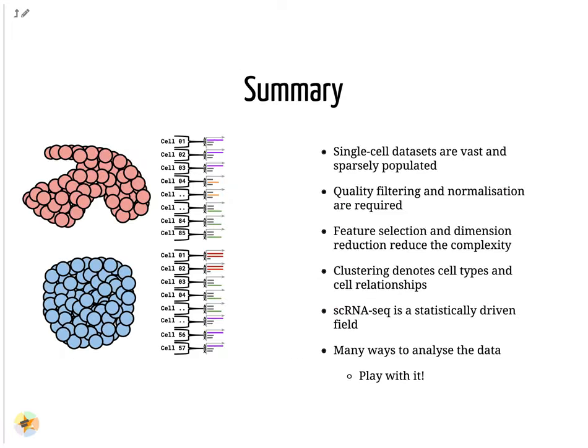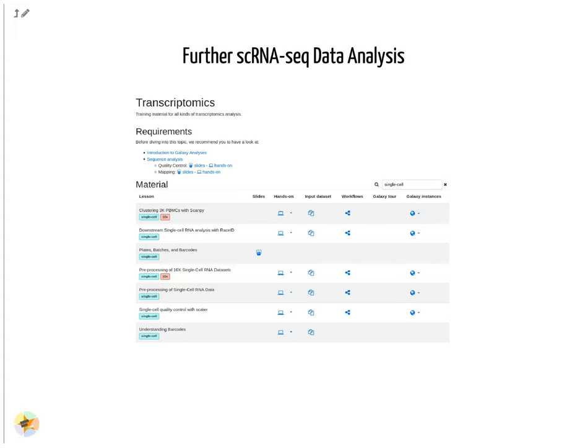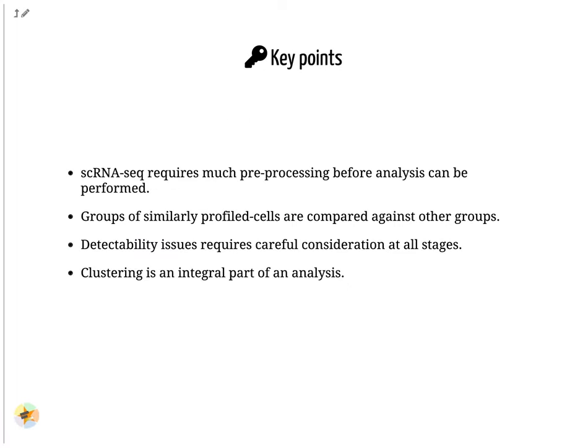Single-cell analysis is non-trivial, and each stage — from the filtering to the normalization to the dimension reduction and the clustering — can drastically affect the outcome of the analysis. Due to the variability in the analysis, one should not panic when faced with uncertainty. The goal is to play around with the data until it begins to reflect the biology; this can take many many tries to achieve, and it may never be perfect, but the idea is to try as many different ways as possible to see what robust conclusions you can come to. In this regard, the vast Galaxy resources can be put to good use by testing out the many different paths of the analysis, and the Galaxy Training Network provides tutorials and hands-on trainings to assist you. Single-cell RNA-seq requires much pre-processing before analysis can be performed. Groups of similarly profiled cells are compared against other groups. Detectability issues require careful consideration at all stages. Clustering is an integral part of an analysis. Thank you for watching!